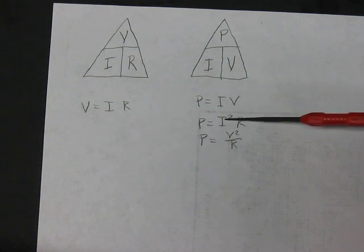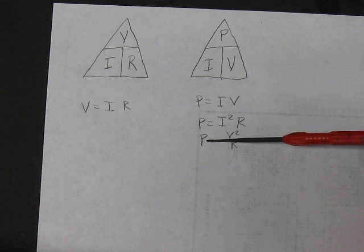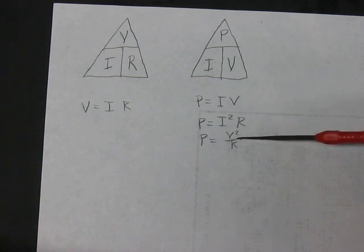P can equal I squared R. You'll see this a lot, or hear it a lot. Another way is P equals V squared over R.